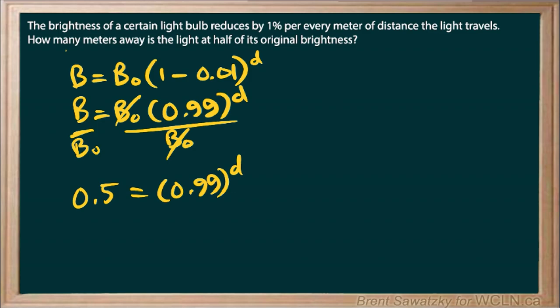If we were to log both sides, we'd have log of 0.5, and then we bring that d down to the front, and log 0.99, and we'll give ourselves a little more room here.